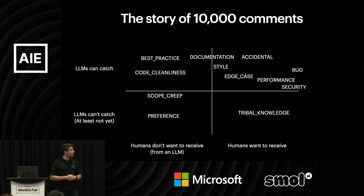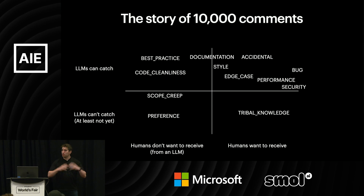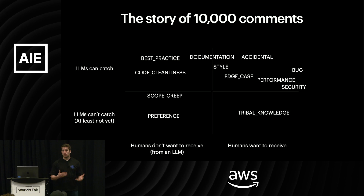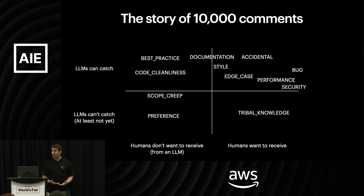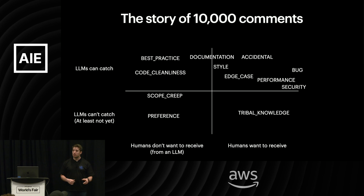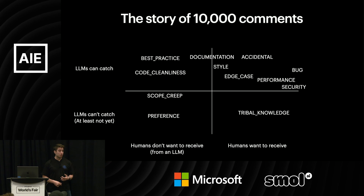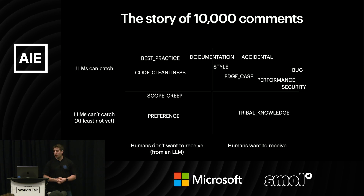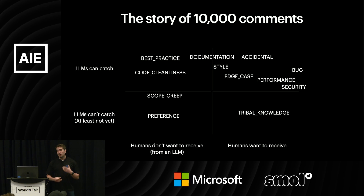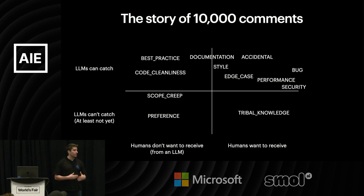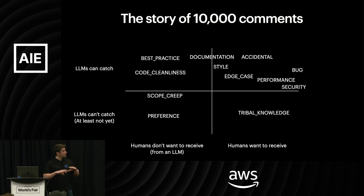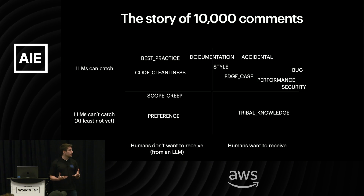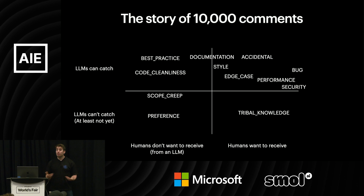The chart shows there are quite a few different types of comments you see left on codebases in the wild — ignoring LLMs for a second, just talking about humans. You see things which are bugs: logical inconsistencies that lead code to behave in a way it's not supposed to. There's accidentally committed code, which shows up more than you'd expect. There are performance and security concerns. There's documentation where code says one thing and does another. There are stylistic changes. And then there's stuff outside that top-right quadrant — like tribal knowledge in the bottom right, where humans want to receive it but LLMs don't seem to be able to get there yet.